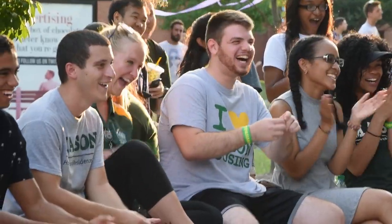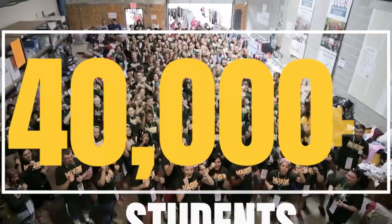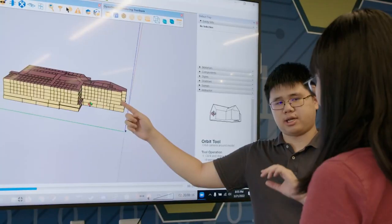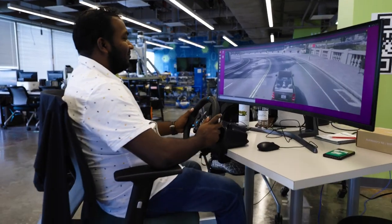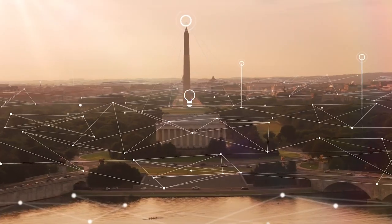George Mason University is the largest and most diverse public research university in Virginia and the first in our state's history to top 40,000 students. We are proud to be a leader in developing the tech talent to drive innovation in our state and throughout the Washington, D.C. region.